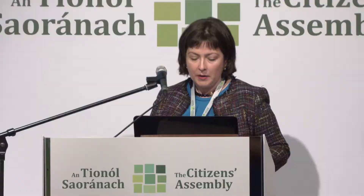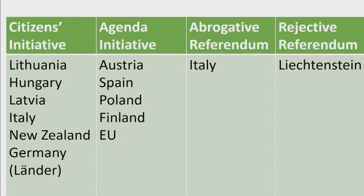Moving on to some examples from around Europe of the different types of instruments and where they are in place: citizens' initiatives are available in quite a number of countries. In Germany, they operate at the state level rather than the national level. The agenda initiative is found in Austria, Spain, Poland, Finland, and more recently in the EU. But the veto instruments are less prevalent and found in fewer countries.